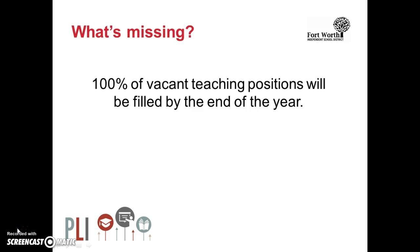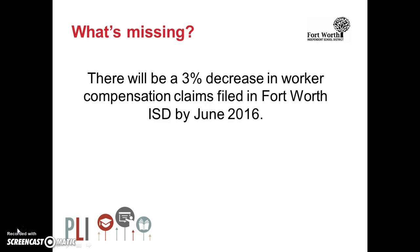Let's test your SMART goal knowledge by identifying the missing components in the following goals. First example: What components are missing? '100% of vacant teaching positions will be filled by the end of the year.' Second example: What components are missing? 'There will be a 3% decrease in worker compensation claims filed in Fort Worth ISD by June 2016.'